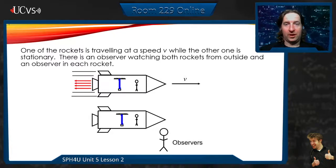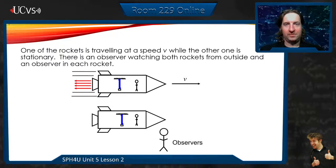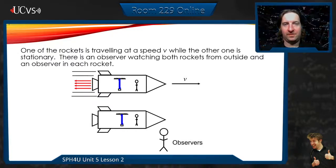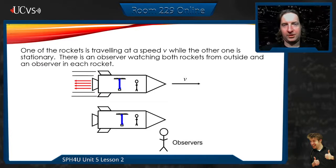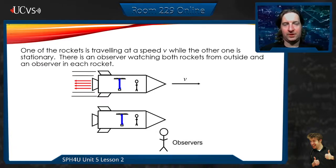So let's say we have two rockets. They both have clocks in them. One's not moving, one's in the rest frame, and one's moving at some speed v. And there's an observer looking at both. There's an observer inside both, and there's an observer outside.